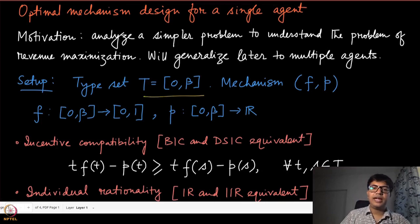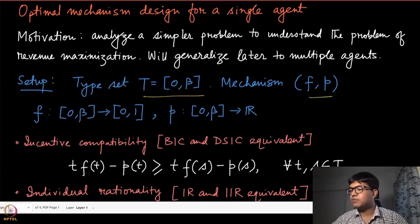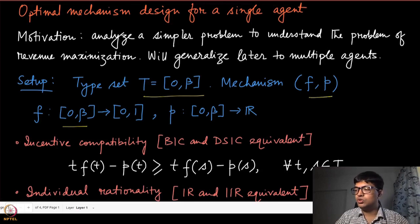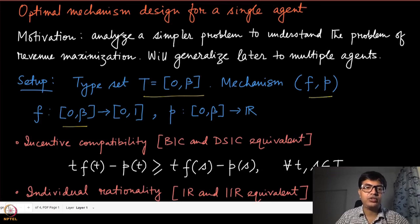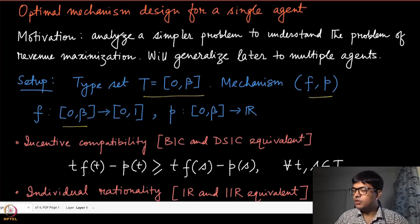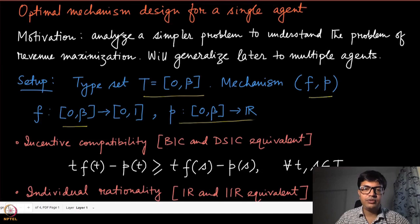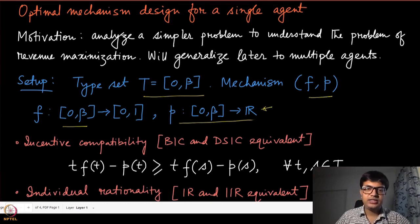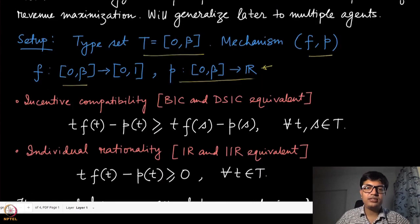The setup here is that there is only one agent, so the type space is given by an interval [0, β]. The mechanism (f, p) maps [0, β] to [0, 1], which is the probability of that agent getting allocated the object — so there is still a chance the object will not be sold at all. The payment maps [0, β] to the set of real numbers.